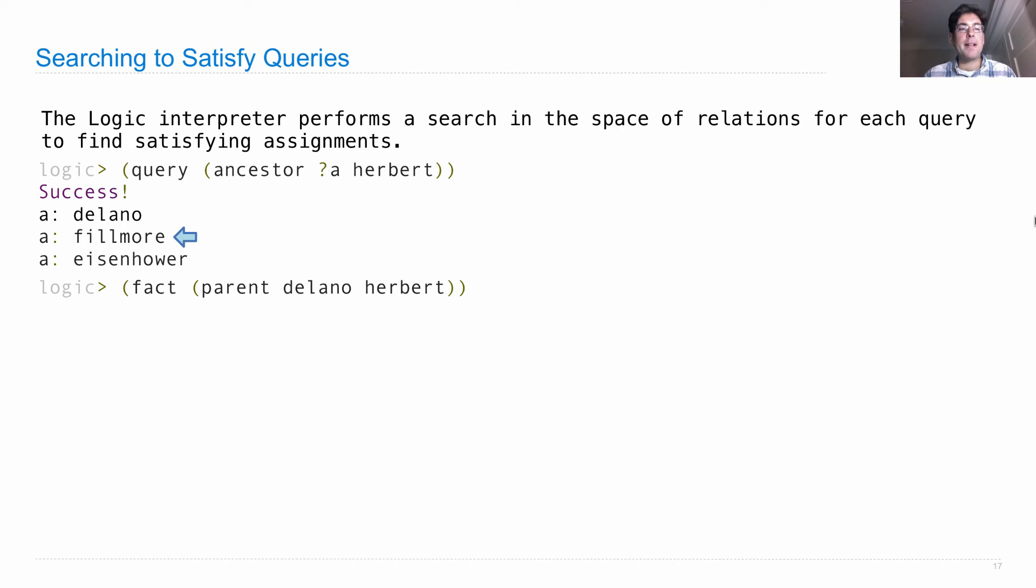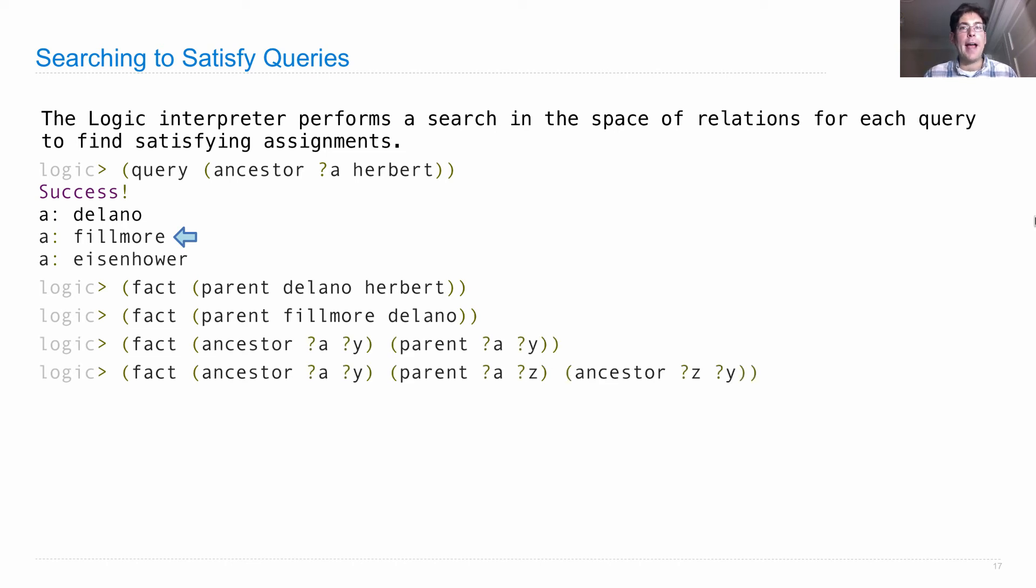I'm just first going to write down all of the relevant facts. So parent Delano Herbert is relevant. Parent Fillmore Delano is relevant. The ancestor base case is relevant, as is the recursive case that we stated.